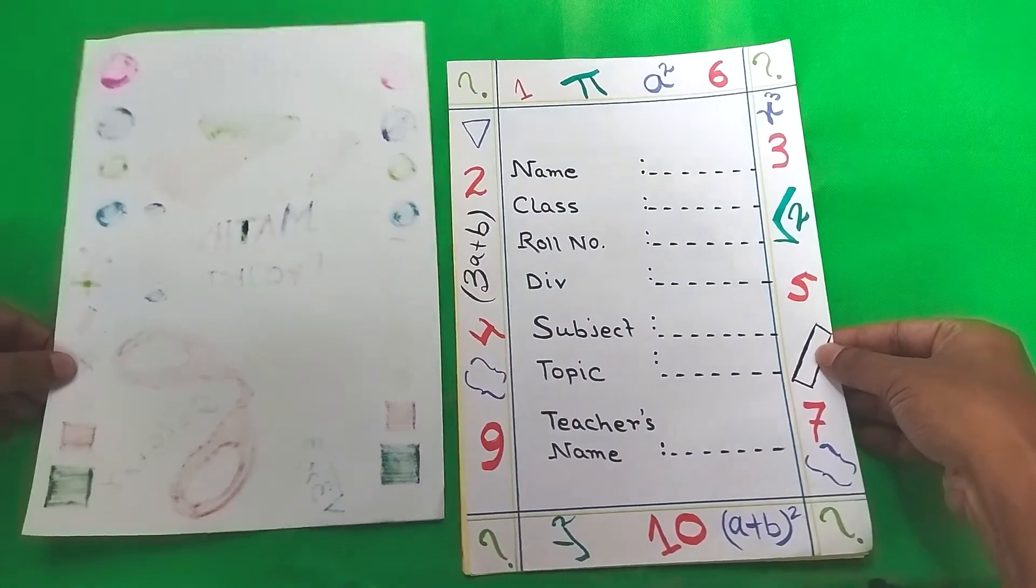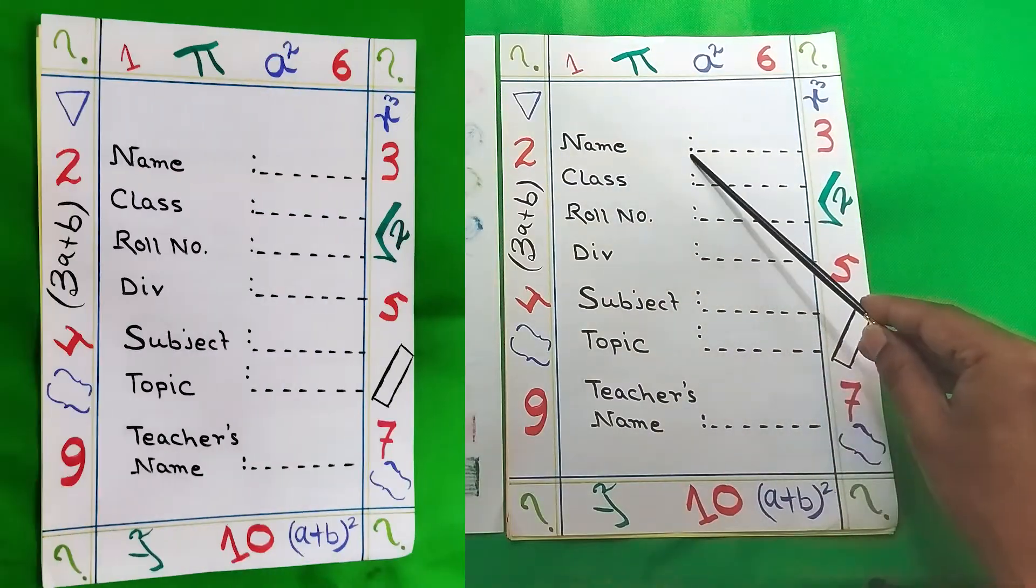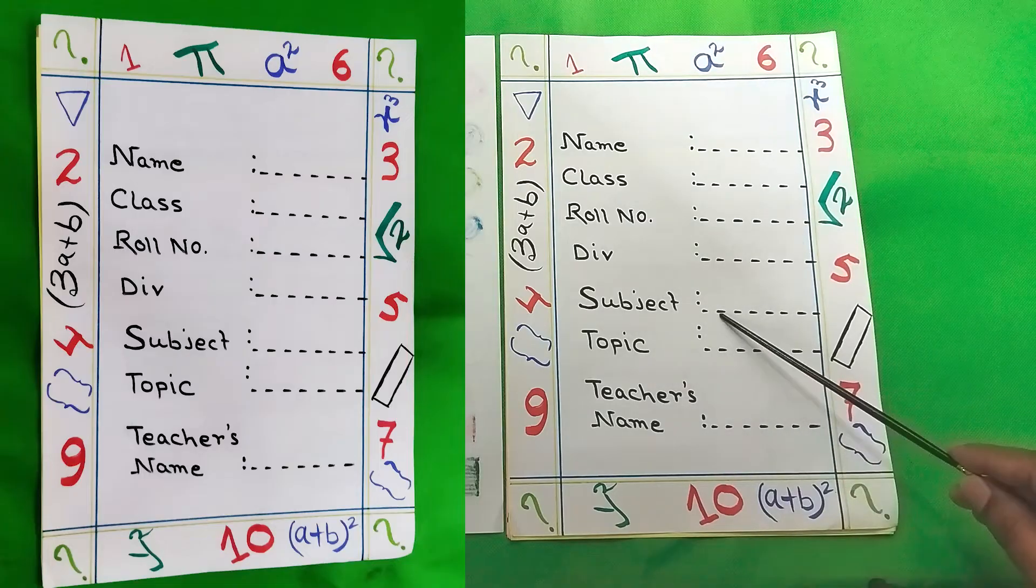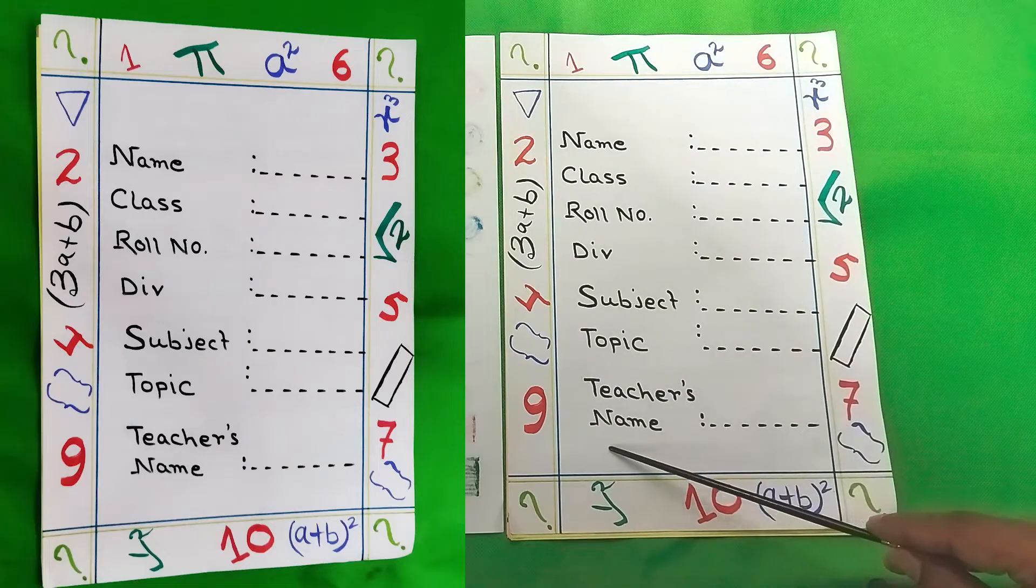So moving on to the next page we can see this is the student details. So we have name, class, role number, division, subject, topic and lastly teacher's name.